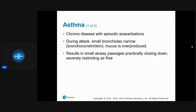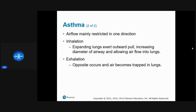Asthma is a chronic disease with episodic exacerbations caused by activity, emotion, or other triggers. It's seen more in children but adults can have it too. During an attack, the small bronchioles narrow — bronchospasm — and mucus goes into overproduction, closing off smaller airways. Air flow is mainly restricted on the way out, so air becomes trapped in the lungs.